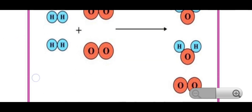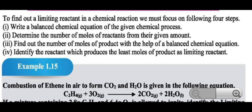To find out the limiting reactant in a chemical reaction, we must follow these four steps: First, write a balanced chemical equation of the given chemical process. Second, determine the number of moles of reactants from their given amounts. Third, find out the number of moles of product with the help of the balanced chemical equation. Fourth, identify the reactant which produces the least moles of product — that is the limiting reactant.